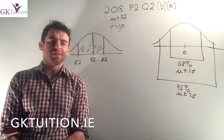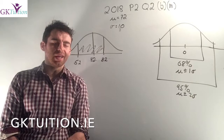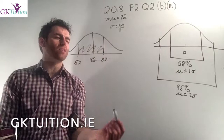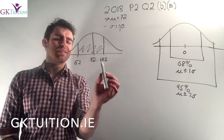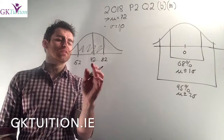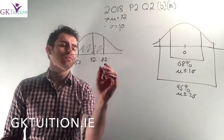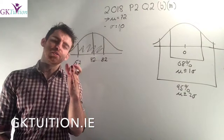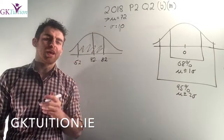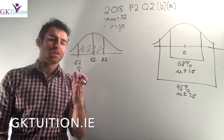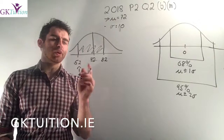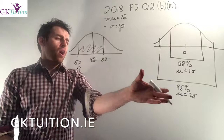In the final part we're asked to estimate, using the empirical rule or otherwise, the percentage of students who got between 52 and 82% in the English test. The average was 72 and the standard deviation was 10. A score of 82 equals 72 + 10, so that represents the mean plus one standard deviation. A score of 52 equals 72 − 10 − 10, so that represents two standard deviations below the mean.